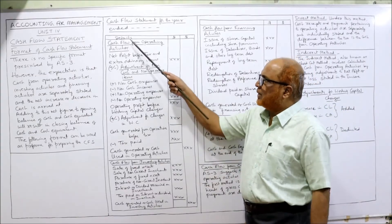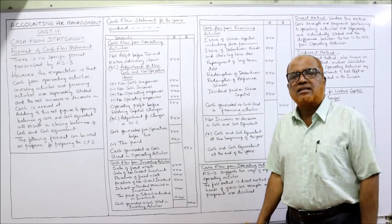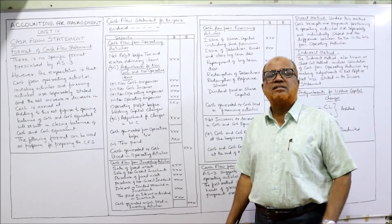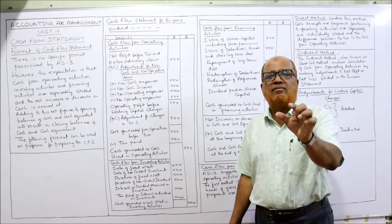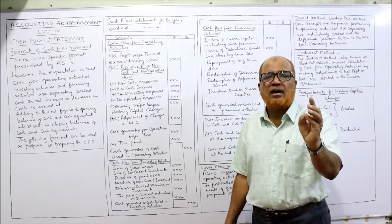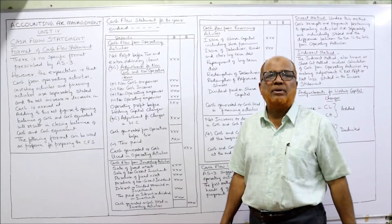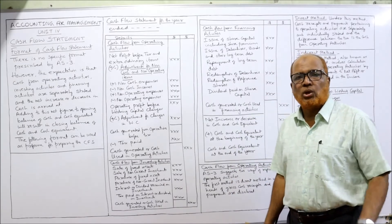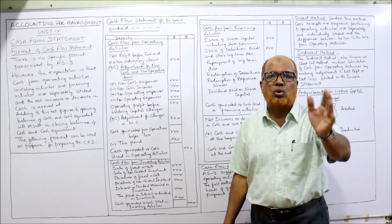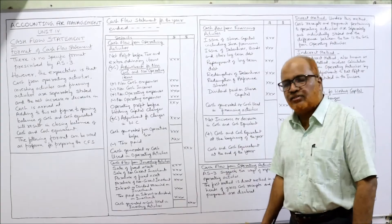The first activity — operating activity — is now complete. The second activity is investing activity. Investing activities are those concerned with acquisition and disposal of non-current assets — fixed assets or long-term investments. Sale of fixed assets means cash inflow, as we are receiving cash. Similarly, sale of non-current investments is also a cash inflow.